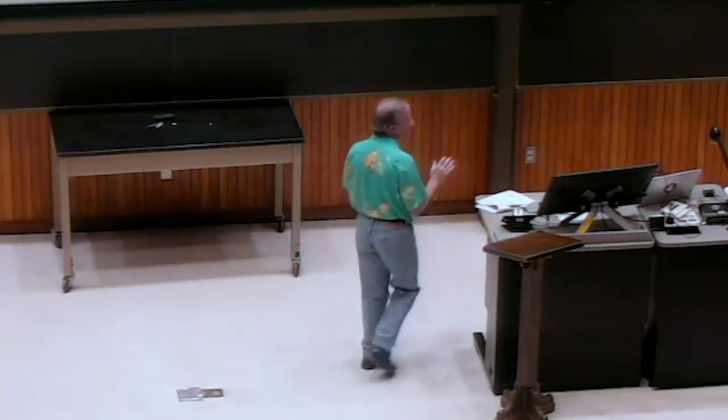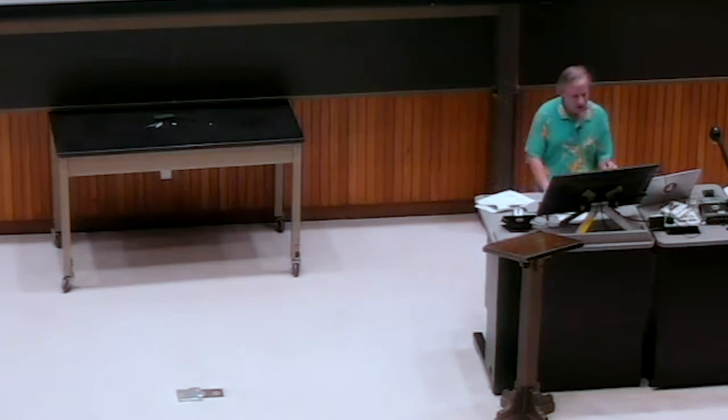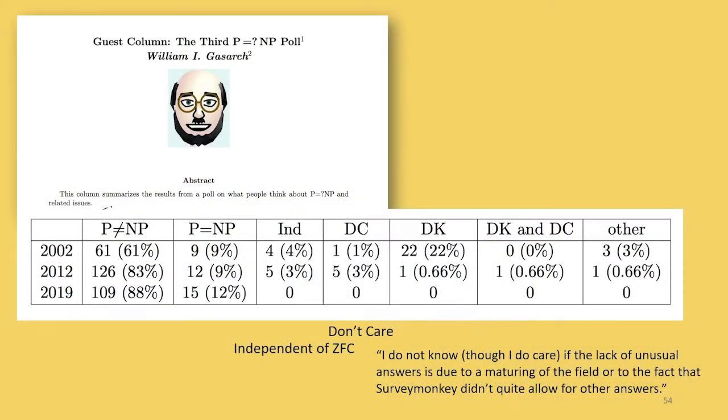Okay, so when we don't have a proof, we can do surveys, right? At least people have done surveys of pools of computer scientists. And it turns out that the number that think P is not equal to NP, according to surveys, is about 88%. Very scientific survey of people who happen to be on a mailing list and were willing to respond.